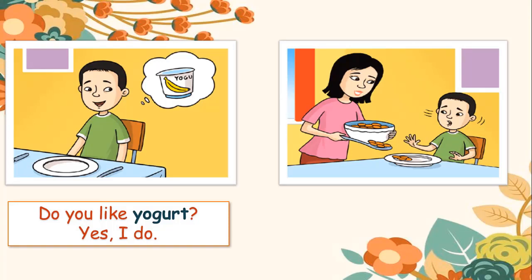Examples. Number one: Do you like yogurt? Yes, I do. You can see the boy in the first picture looks happy, showing that he really likes yogurt. So when asked 'Do you like yogurt?' he answered 'Yes, I do.' Now repeat after me: Do you like yogurt? Yes, I do.